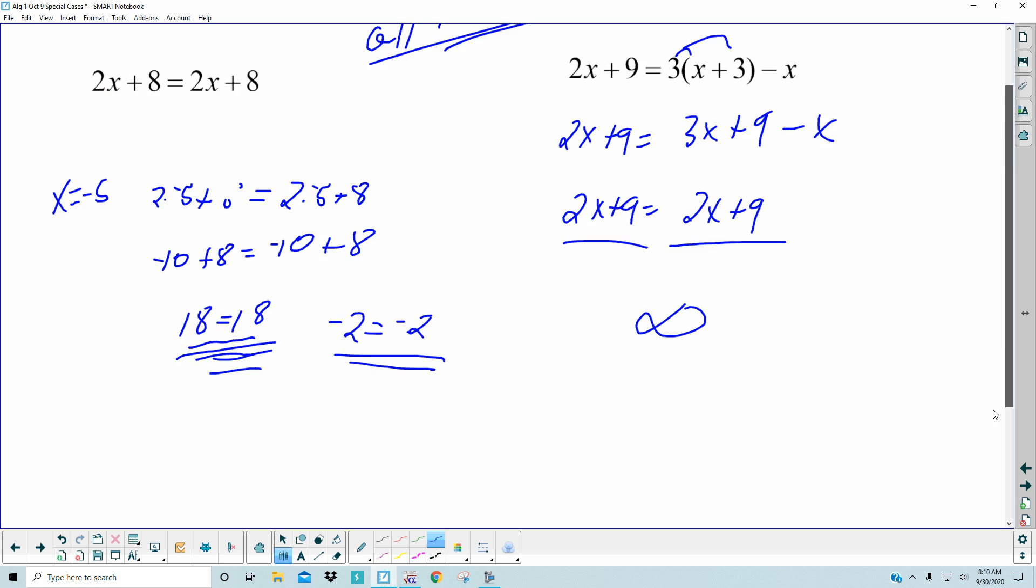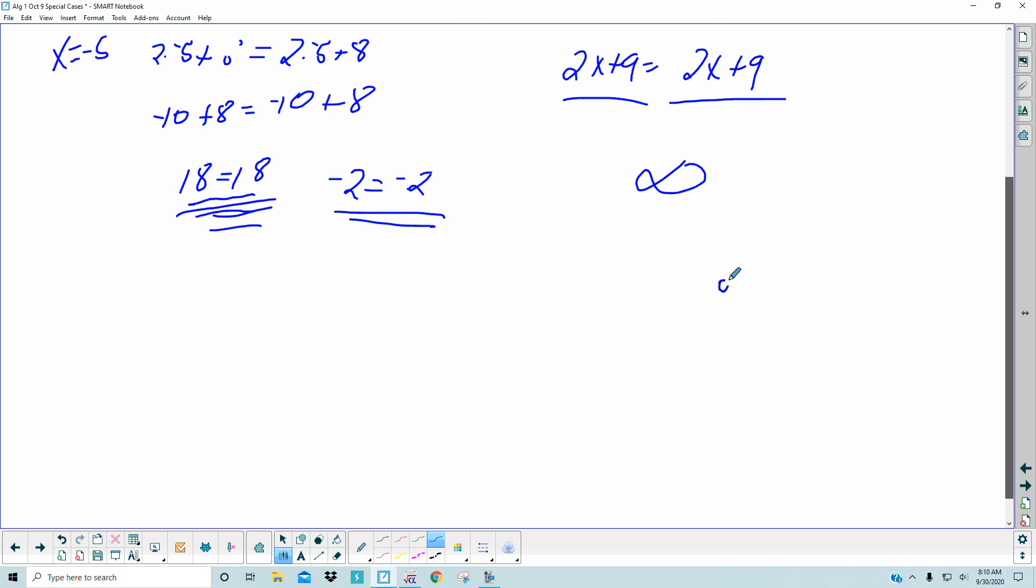So in your homework on Delta Math, it's multiple choice. The first bubble is one answer. The second bubble is no solution, no answer. And the third bubble will be infinitely many. And you're just going to pick which one it is. You're not going to state what the solution is, like x is equal to 5. You're going to choose the bubble that describes how many answers there are. Infinitely many, no solution, one solution.